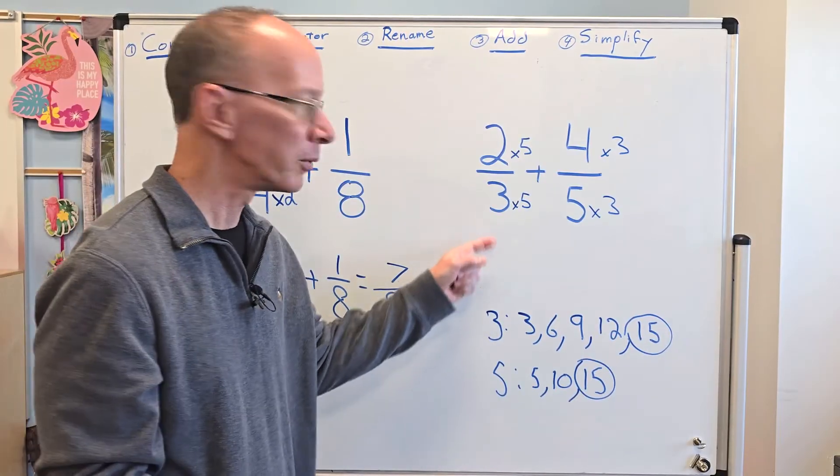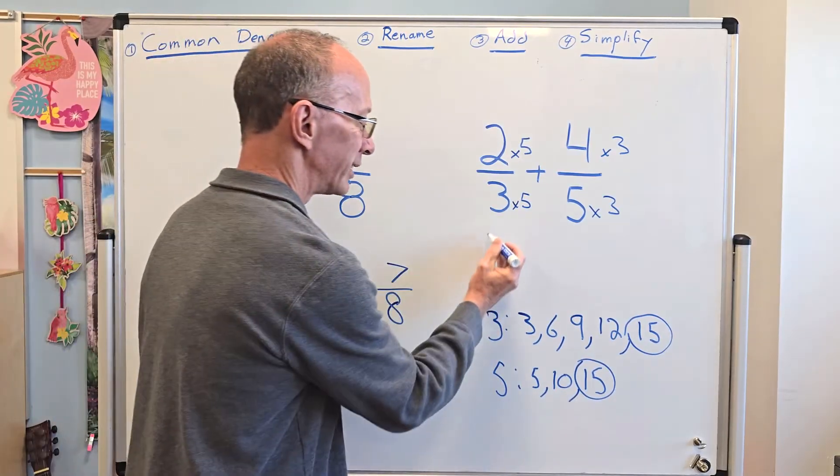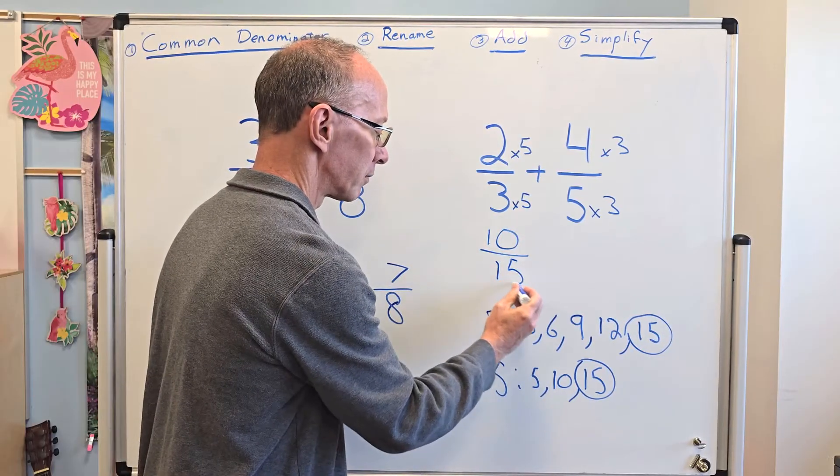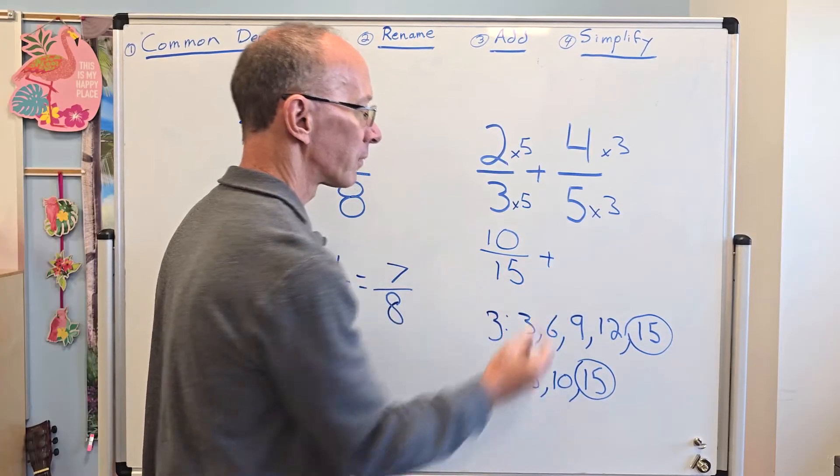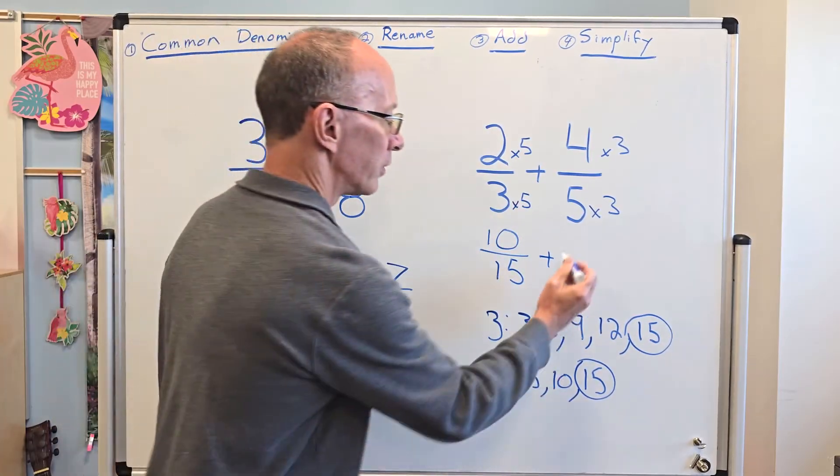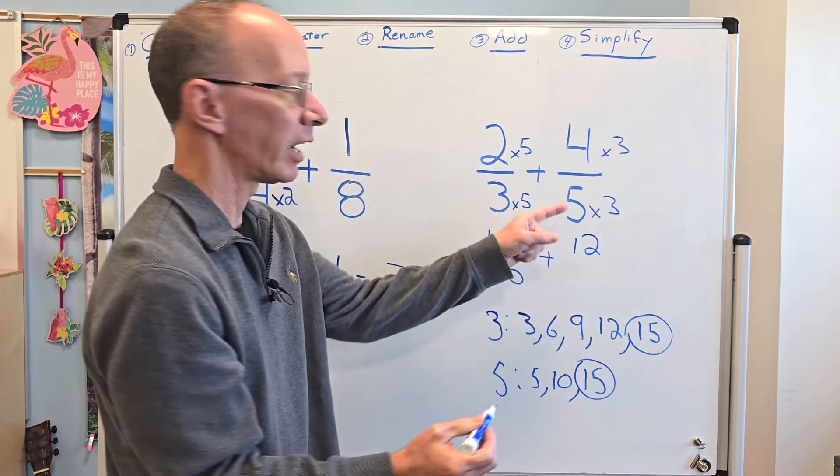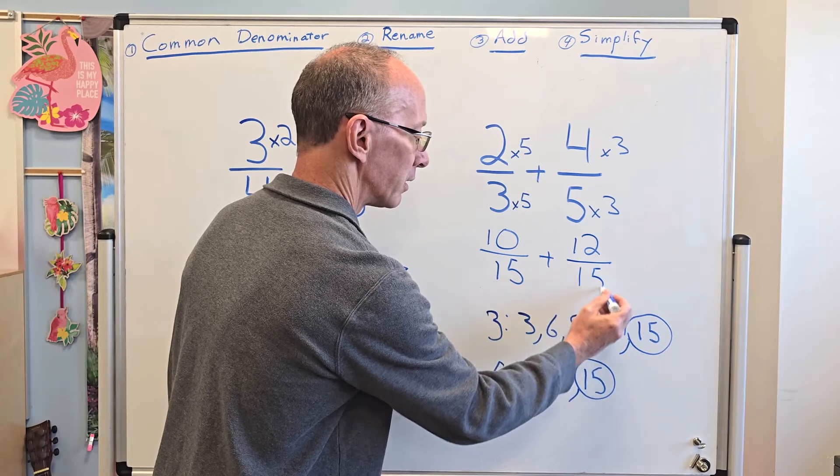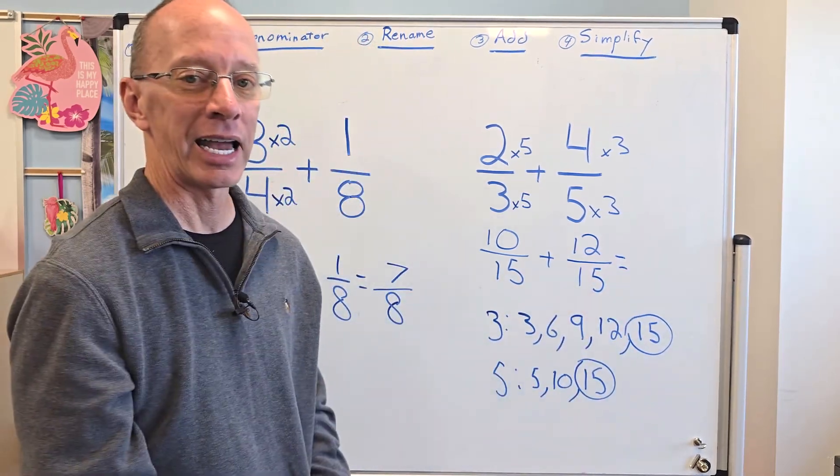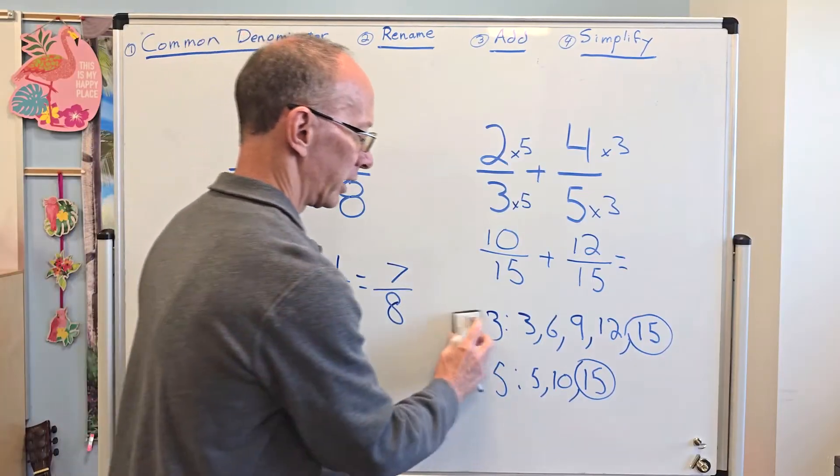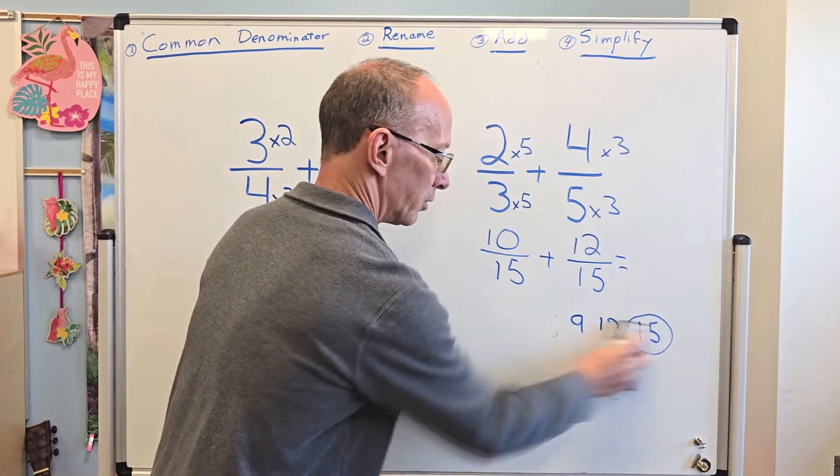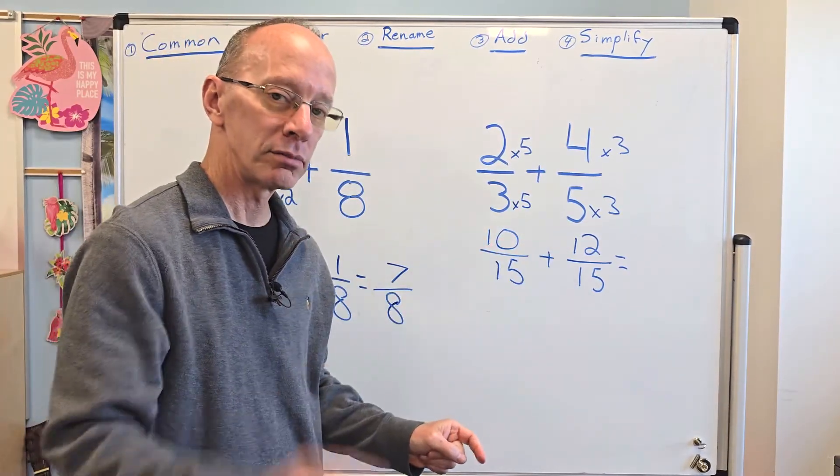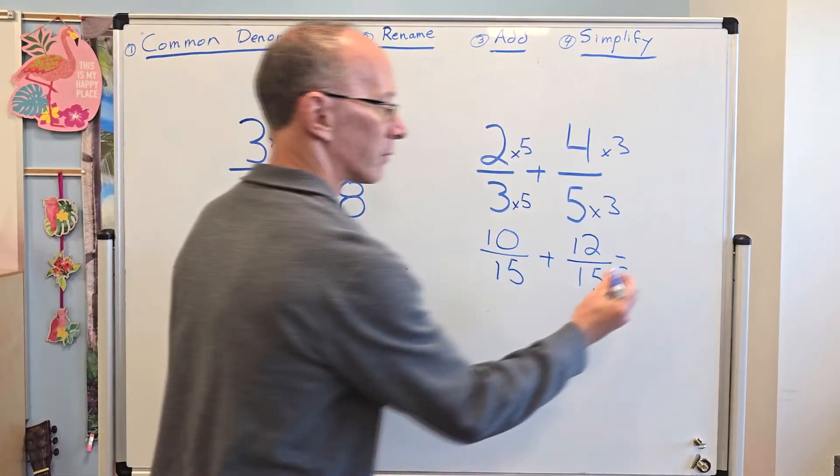So let's go ahead and rewrite this problem. Two times five equals 10. Three times five equals 15. Plus four times three equals 12. And then five times three equals 15. And then we are going to go ahead and add that up. 10 plus 12 equals 22.